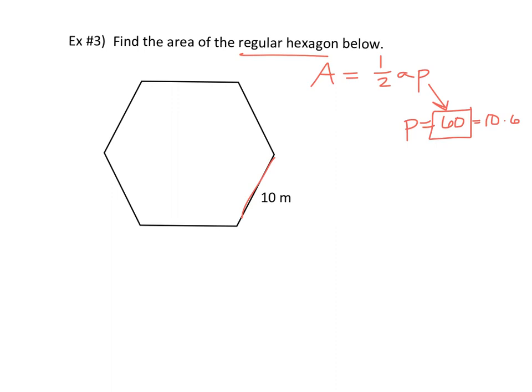Perimeter is going to be 60 because you're just doing 10 times 6. So we know our perimeter. We need to find the apothem, which is not even drawn in for us. We're going to draw it in. So here's what you need to do with this problem. And I think this is where people struggle is they think, okay, well, here's my apothem. How the heck do I find it? Anyone see what you need to do? You got to make the triangle.